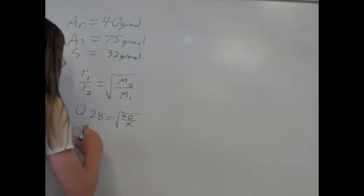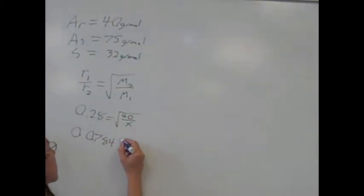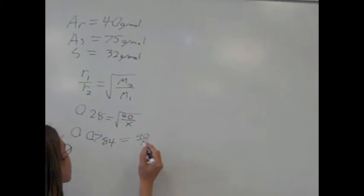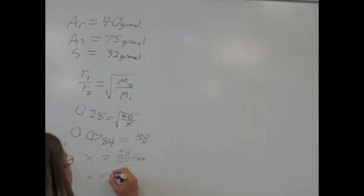By squaring both sides, we get that 0.0784 equals 40 over X. X equals 40 over 0.0784, which is about equal to 510 grams per mole.